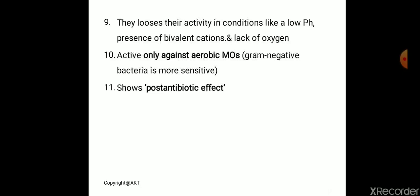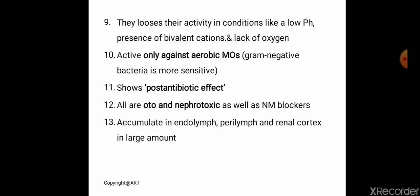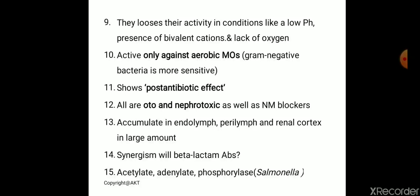They show a post-antibiotic effect: even after the drug is withdrawn, the inhibitory effect on microbial growth remains for more than one week. Almost all drugs in this class show three main toxicities: ototoxicity (toxicity to the ear), nephrotoxicity, and neuromuscular blockade resulting in skeletal muscle weakness, more observed in patients with myasthenia gravis. They accumulate in endolymph, perilymph, and renal cortex in large amounts. They show synergism with beta-lactam antibiotics, as aminoglycosides affect the cell membrane while beta-lactams affect the cell wall. Resistance can develop via enzymes like acetyltransferase, adenylate, and phosphorylase — for example, in Salmonella.